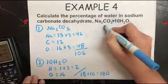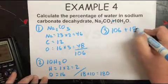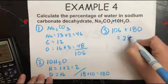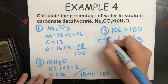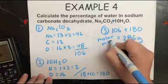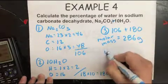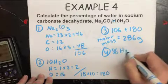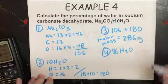So then step 3 is to simply take 106 plus 180, which gives you 286 grams. This is the overall molar mass of the hydrate. So then step 4 is to actually find the percent of H2O. So you're going to do the mass of water divided by the total mass times 100.